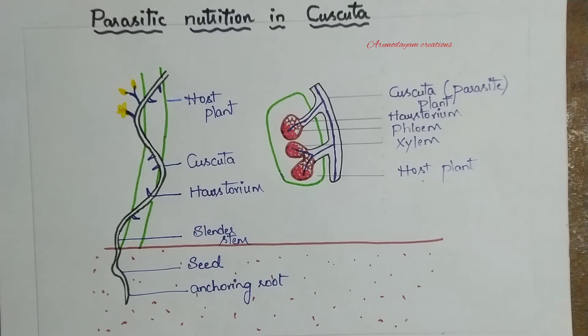Next, heterotrophic nutrition: organisms cannot prepare their own food materials and depend on other organisms. Various organisms, including Cuscuta plants, fall under heterotrophic nutrition.